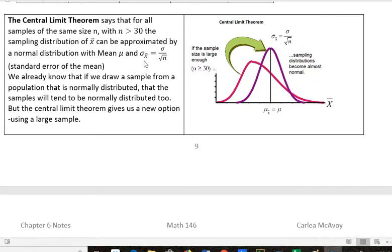instead of using the standard deviation from the population, we take that standard deviation of the population and we divide by the square root of n, n being the number of elements in our sample size.